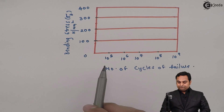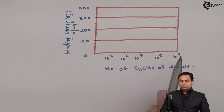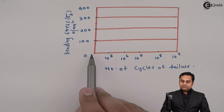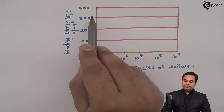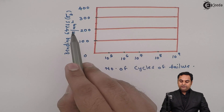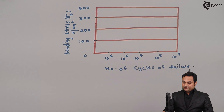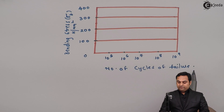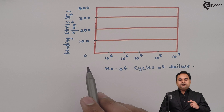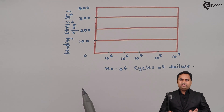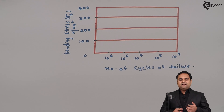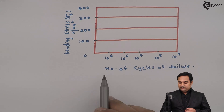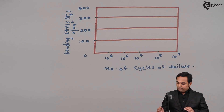Here we have a graph in which on the Y-axis we have bending stresses starting from 0, then 100, 200, 300, 400 — in terms of Newton per mm square. Similarly on the X-axis we have number of cycles of failure; that is, the object is subjected to 10 to the power 5 cycles, meaning that many times the stresses are acting on that object.